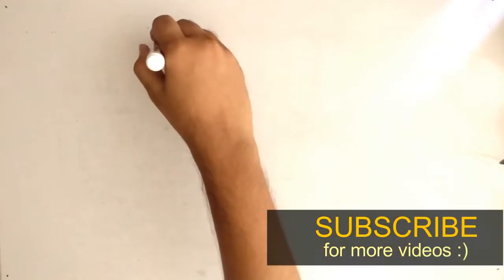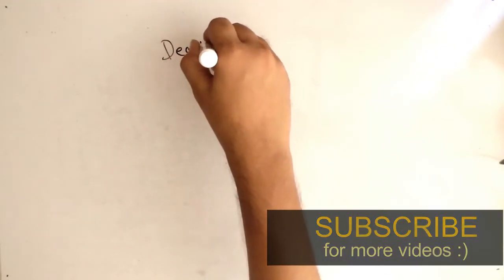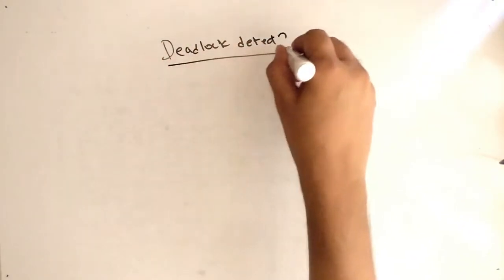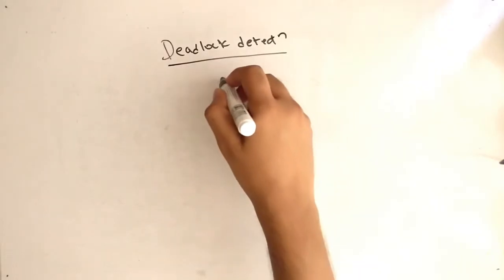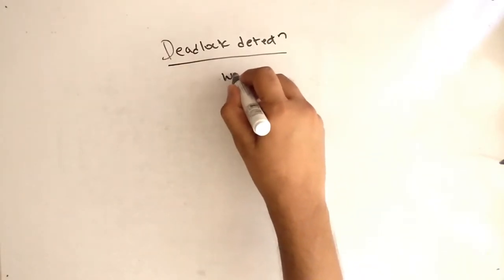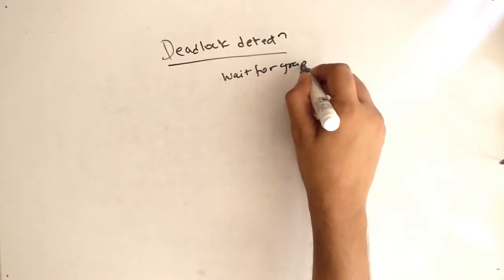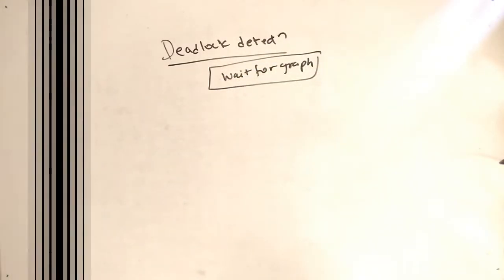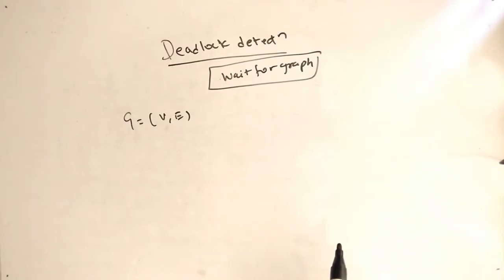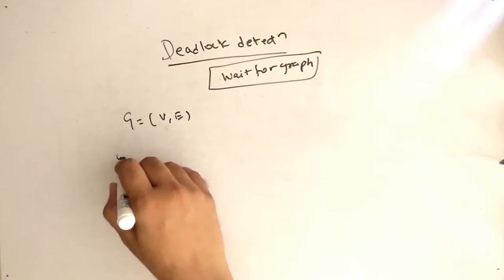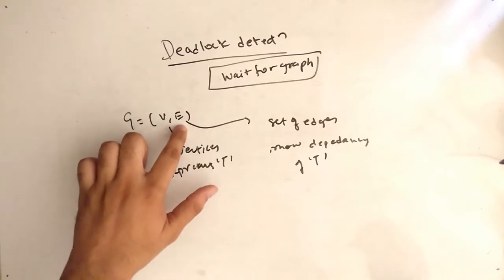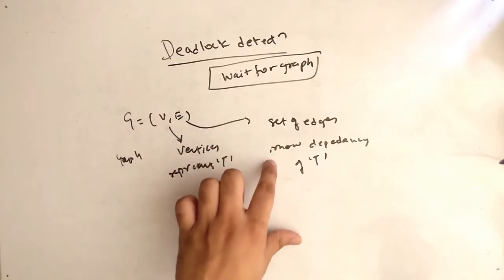Now let's talk about deadlock detection. There is only one way — that is the wait-for graph. This is the method to detect the deadlock. G is equal to V comma E. G means the graph, V means the vertices representing the transactions, and E means the set of edges showing the dependency of the transactions.